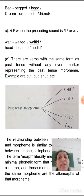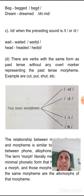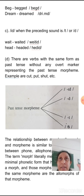There are also verbs with the same form for past tense and base form, without any overt marker representing the past tense morpheme. For example: 'cut', 'put', 'shut', etc. — they have the same past tense form. That is the zero allomorph. So the variants of the past tense morpheme are: /t/, /d/, /ɪd/, and the zero allomorph.